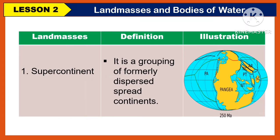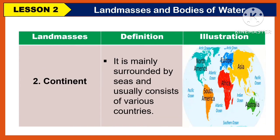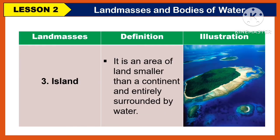When we talk about a supercontinent, it is a grouping of formerly dispersed continents. Another landmass is what we call a continent. It is mainly surrounded by seas and usually consists of various countries. Another landmass is what we call an island. It is an area of land smaller than a continent and entirely surrounded by water.